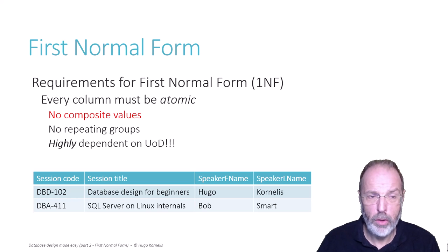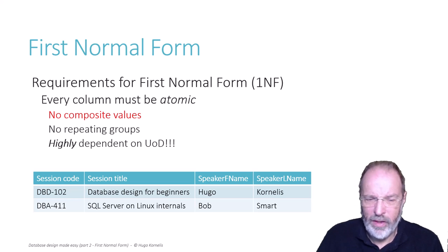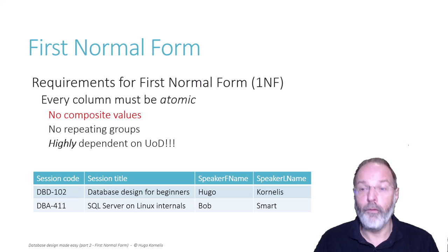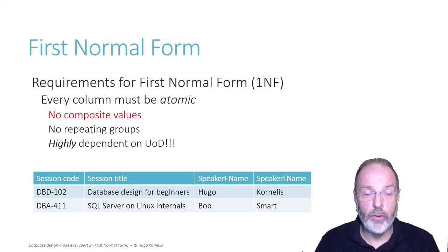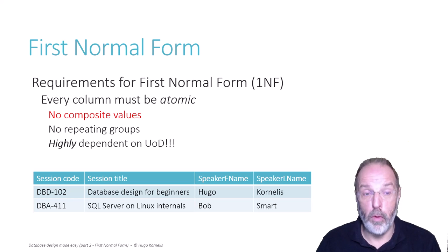I say this depends on the universe of discourse. How are we going to use those names? Are we always going to concatenate first name and last name to print Hugo Cornelis or Bob Smart on everything we print or show on a display? Or are we going to use these to send personalized emails — starting with 'Hi Bob!' — or formal letters like 'Here is your invoice, Mr. Smart'? And then how do we know to use Mr. and not Mrs.? So we probably need more columns.